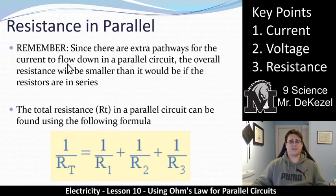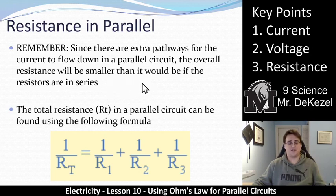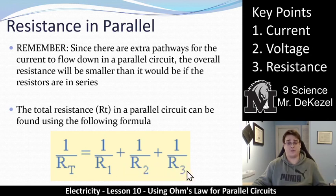Now, resistance in parallel — this is where it gets a little bit more complicated. Since there are extra pathways for the current to flow down in a parallel circuit, the overall resistance will be smaller than if the resistors were in series, or even if there were only one resistor. The total resistance will be smaller than any one of these singular resistors because there are more pathways for the current to flow down. The total resistance in a parallel circuit can be found using this formula.